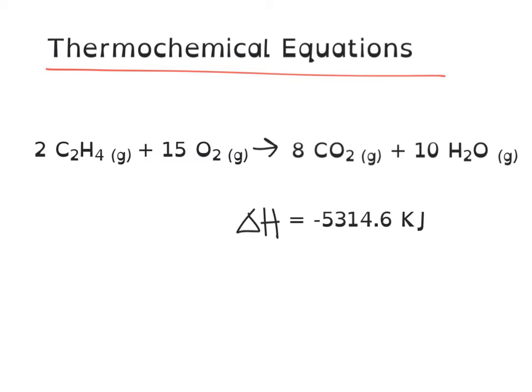The equation here you see on the screen says 2 C₂H₄ plus 15 O₂ make 8 CO₂ and 10 H₂O. And when you do this reaction, you end up with a ΔH of negative 5,314.6 kilojoules.